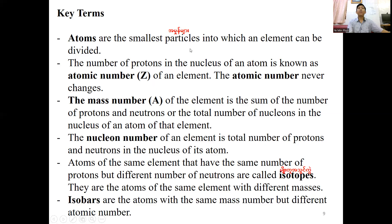Atoms are the smallest particles into which an element can be divided. The number of protons in the nucleus of an atom is known as the atomic number of an element. The atomic number never changes. The mass number of an element is the total number of protons and neutrons in the nucleus of an atom of that element.